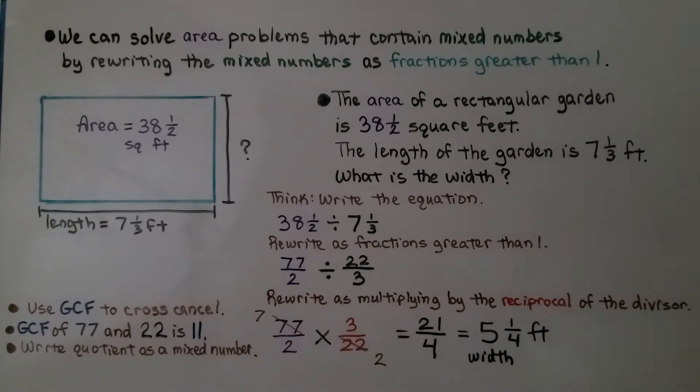Now we rewrite as multiplying by the reciprocal of the divisor. So this is going to become a multiplication sign. And we flip this around to the reciprocal. Now we have 77 halves times 3 22nds.